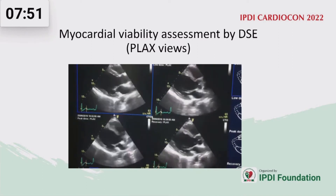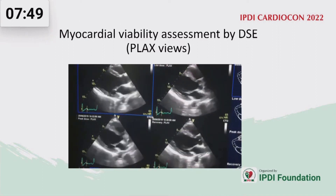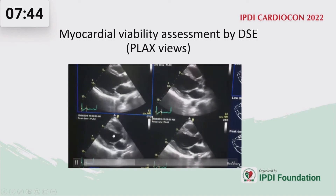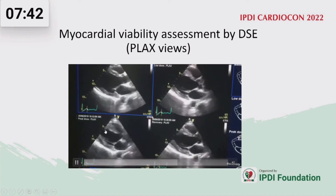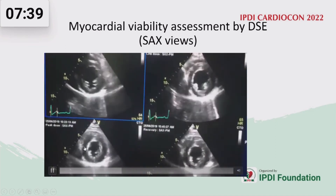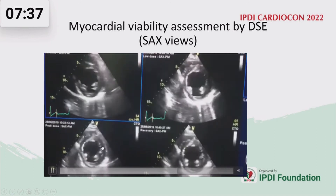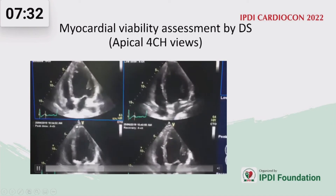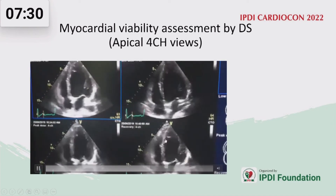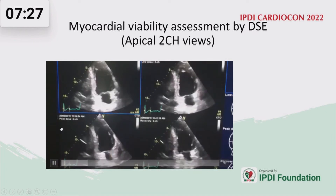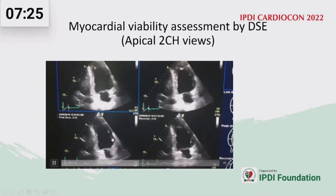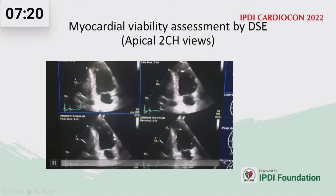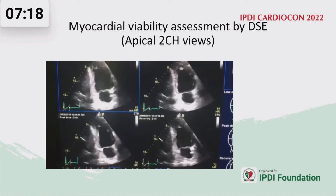Dobutamine echocardiography is used to detect contractile reserve. In the parasternal long-axis view, the septum and anteroseptum improved after dobutamine infusion. Short-axis view showed improved contractility of the septum, anteroseptum, and anterior wall in the mid region. Apical four-chamber view showed improved contractility of the basal and mid septum. Apical two-chamber view also showed improved contractility of the basal and mid septum after dobutamine infusion, confirming myocardial viability by contractile reserve.